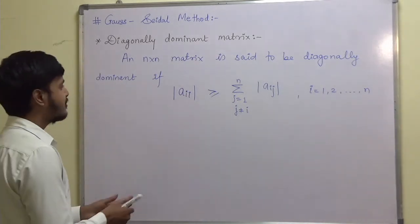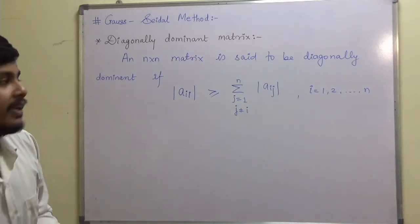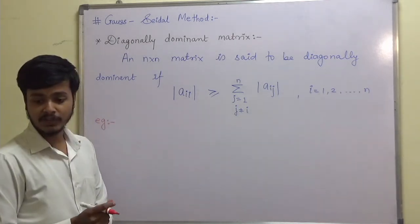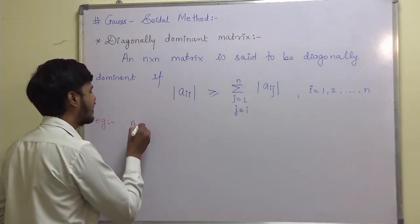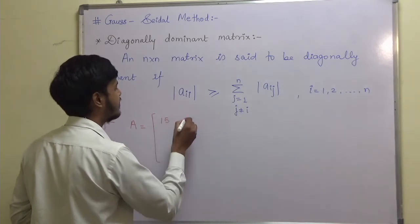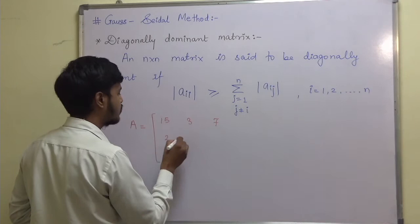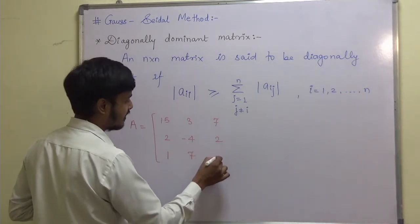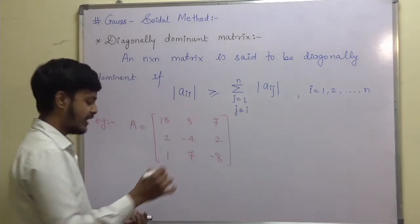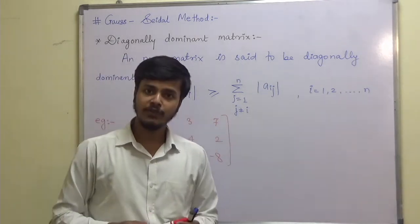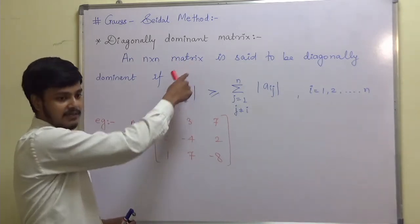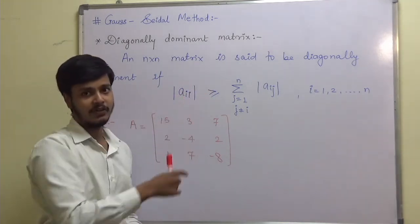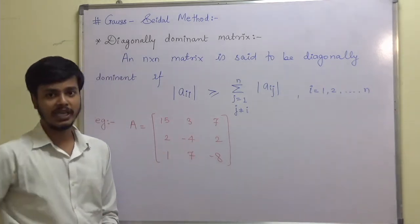To make the idea more clear, let me take an example. You are going to tell me whether the matrix is diagonally dominant or not. I have a matrix A equal to: 15, 3, 7 in the first row; 2, minus 4, 2 in the second row; and 1, 7, minus 8 in the third row. Now pause the video for a few seconds and try to work out with this definition and tell me whether this matrix is diagonally dominant or not.